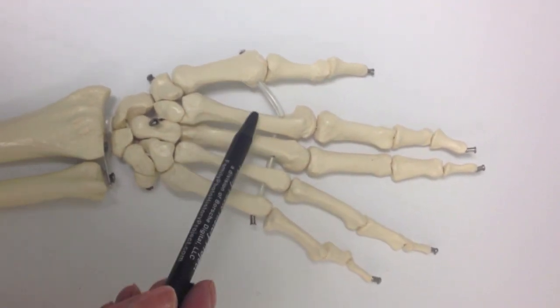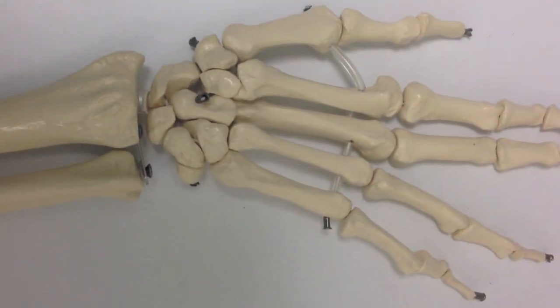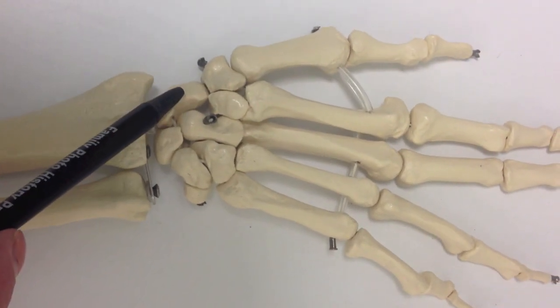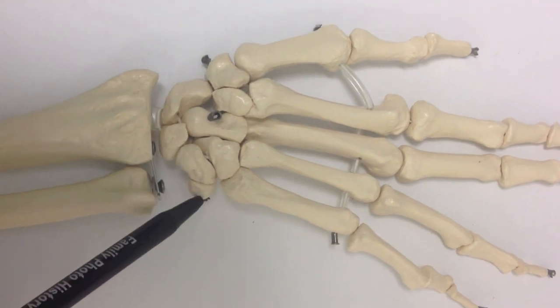Then we have the carpal bones. So we'll start with the scaphoid, lunate, triquetrum, and pisiform.